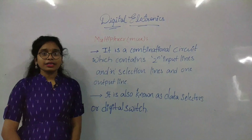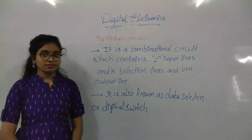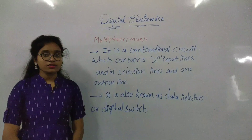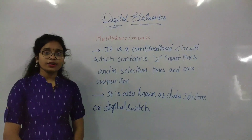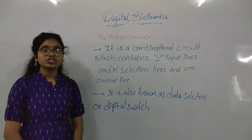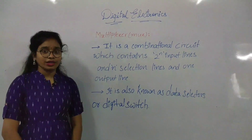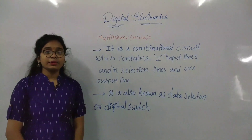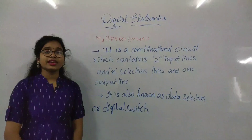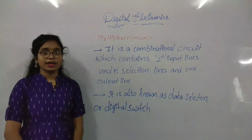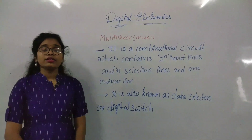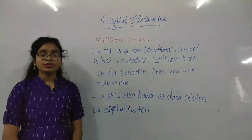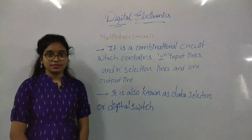Multiplexer is shortly known as MUX. A multiplexer is a combinational circuit which contains two-power-N input lines, N selection lines, and one single output line. These N selection lines help the multiplexer to select one from the two-power-N input lines as output. Multiplexer is also known as a digital switch or data selector.